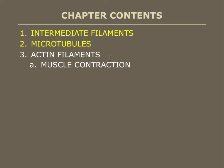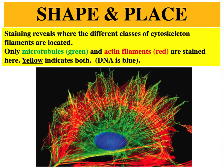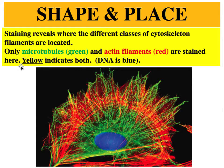Actin filaments are discussed in the second video on Chapter 17. This image was generated when scientists labelled different types of cytoskeleton with different dyes. Microtubules are labelled in green, arranged starting near the nucleus and radiating outwards. Actin filaments are stained in red, positioned mostly around the periphery of the cell. Yellow areas where the two overlap indicate the presence of both.